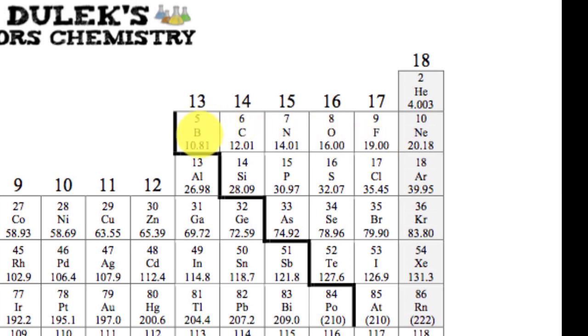So therefore, boron, which is going to attempt to try to create a double bond with fluorine, is not going to be able to do it. Why? Because its electronegativity value is just way too low. That double bond is never going to happen.